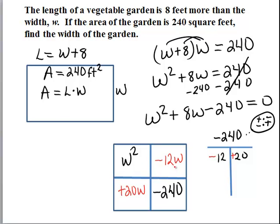The greatest common factor for the first row is w. The greatest common factor for the second row is 20, and we will write plus 20, since the contents of this box that it's touching are positive. Now let's look at the first column. The greatest common factor here is w, and the second column, the greatest common factor there is negative 12.